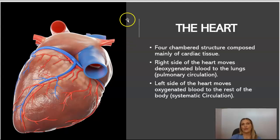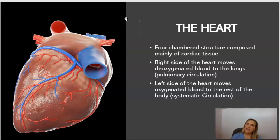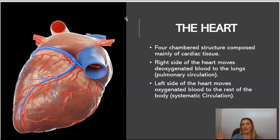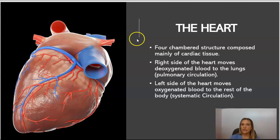The heart is a four-chambered structure consisting mostly of cardiac tissue. The right side of the heart moves blood to the lungs, which is pulmonary circulation, and the left side of the heart moves the oxygenated blood back to the rest of the body through the vasculature or blood vessels, which is also known as systemic circulation.